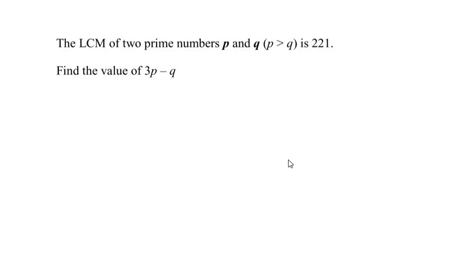Hello and welcome to my channel. In this video we are going to solve an example on real numbers. The lowest common multiple of two prime numbers p and q, where p is greater than q, is given as 221. We have to find the value of 3p minus q.